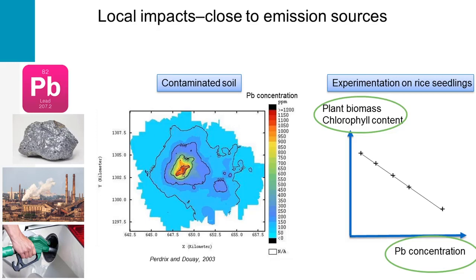The results showed that the plant biomass and the chlorophyll content of rice leaves decreased as we increased lead concentrations. The toxic effects of lead on plants are multiple and depend on a variety of factors, including the lead concentration and the duration of exposure. Besides, even if the pollutant source is no longer active, heavy metals have the characteristic to accumulate in soils, in living beings and in the food chain.